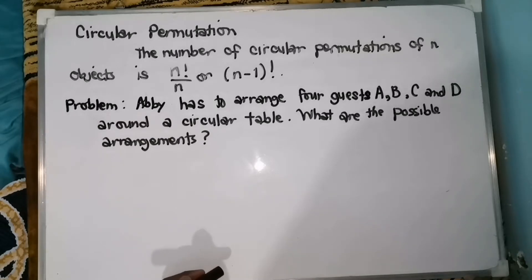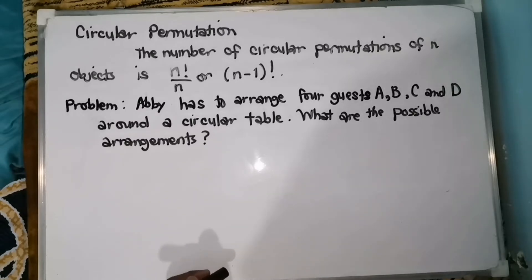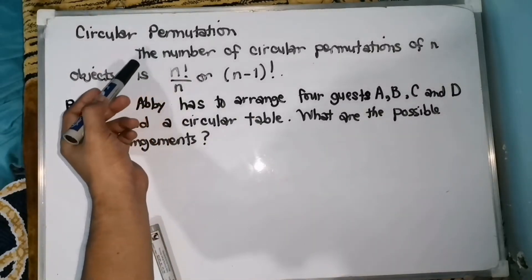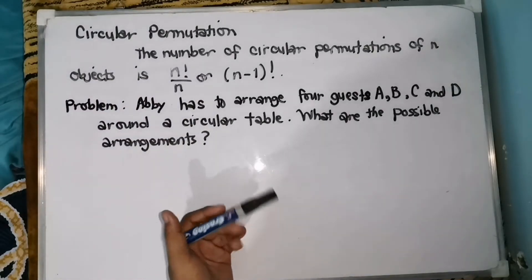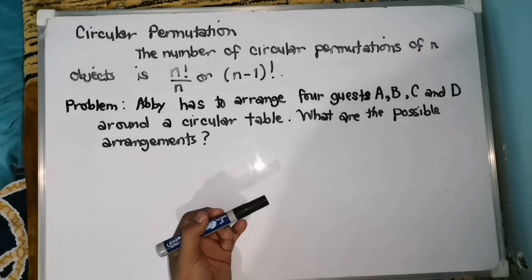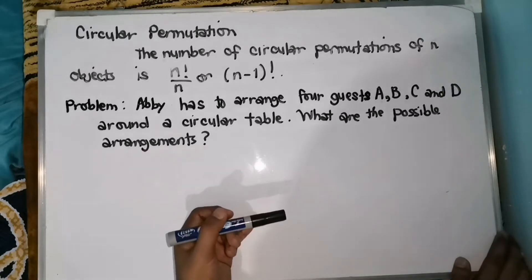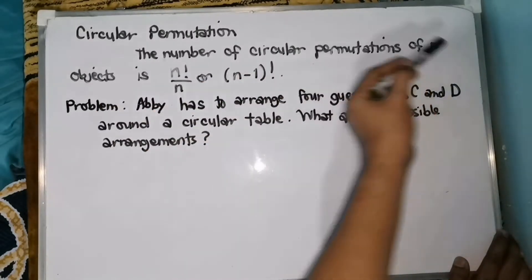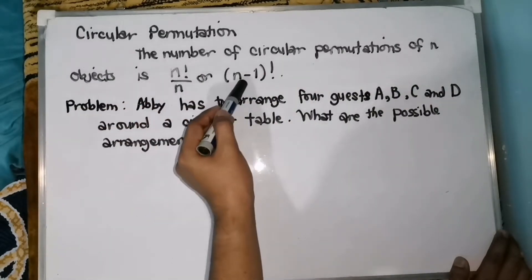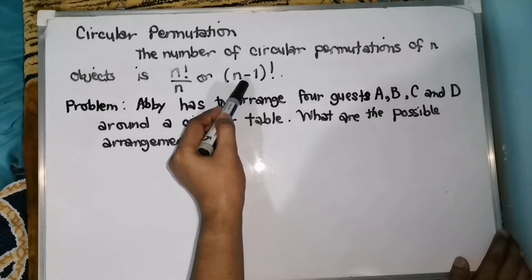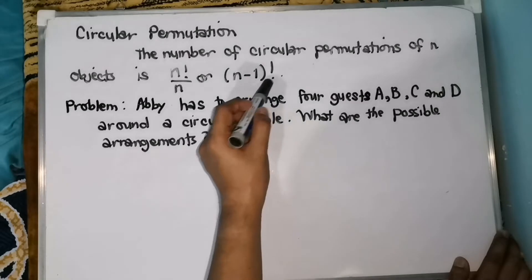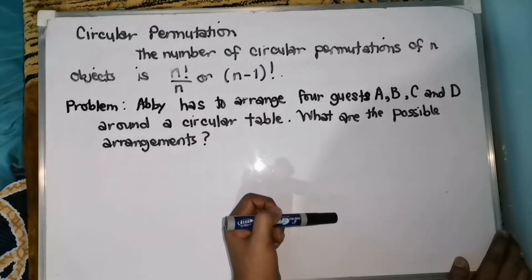So, for today's video, ay continuation ng lesson natin that is about permutation. So, ngayon naman ay i-discuss ko ang circular permutation. From the title itself na circular permutation, so circular, meaning that the arrangement of objects is in circle form or pabilog. The number of circular permutation of n objects is n factorial over n, or the quantity n minus 1 factorial.